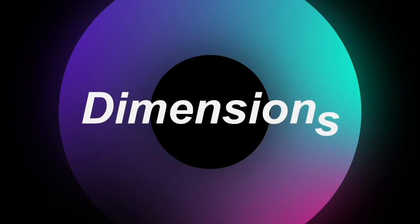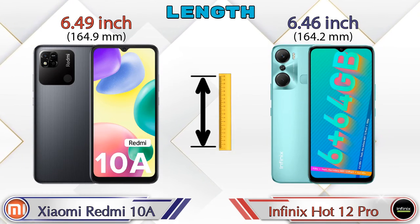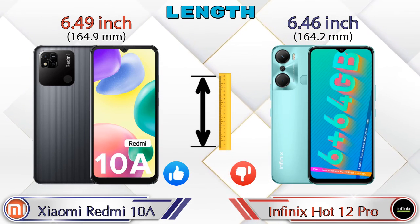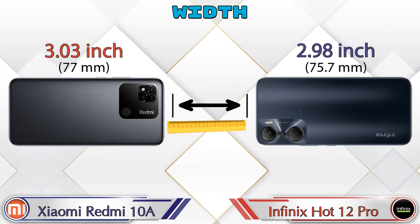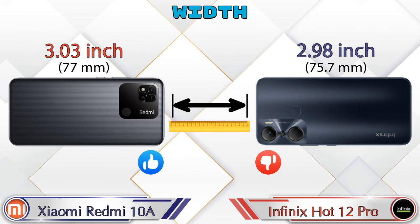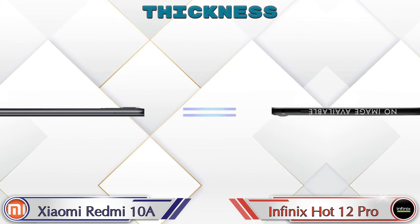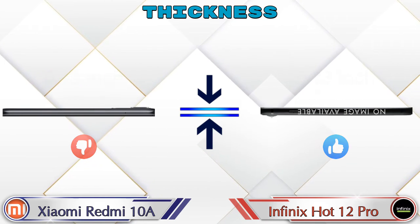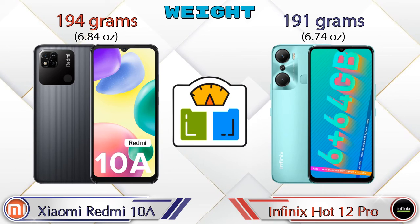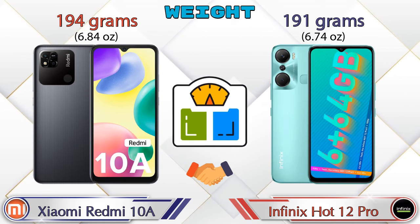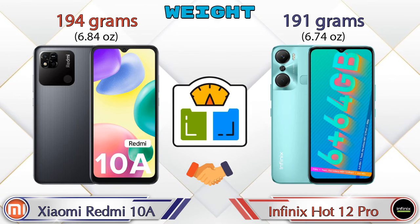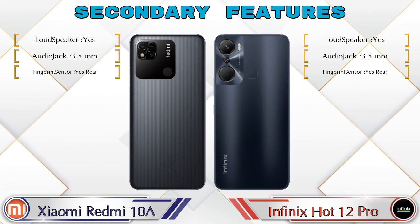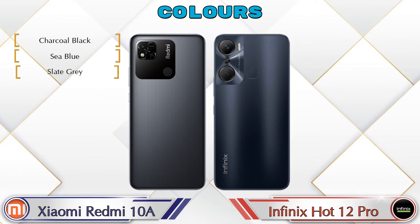Now let's check dimensions. Length: Redmi 10A is 6.49 inches and Hot 12 Pro is 6.46 inches. Width: Redmi 10A is 3.03 inches and Hot 12 Pro is 2.98 inches. Thickness: Redmi 10A is 0.35 inches and Hot 12 Pro is 0.33 inches. Weight: Redmi 10A is 194 grams and Hot 12 Pro is 191 grams — almost similar.